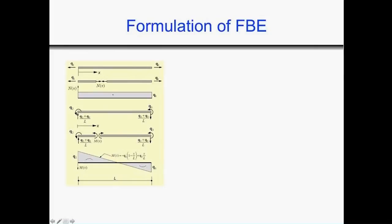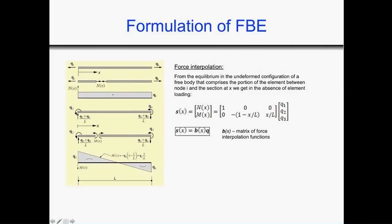This example is for the case with no distributed loads along the element. In case there are distributed loads, you can again find exact bending moments and exact force interpolation functions. Knowing the relationship between Q1 and internal axial forces, and between Q2, Q3 and bending moment, we can form in compact form a relationship between internal forces S(x) and basic forces — and the interpolation matrix is designated as B.